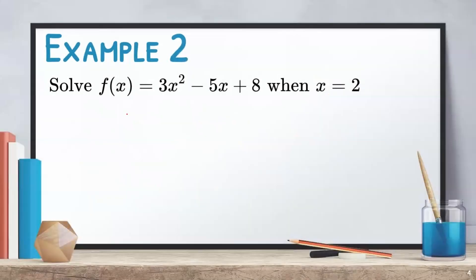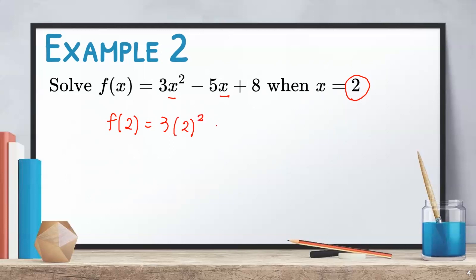Let us have another example. Solve f of x equals 3x squared minus 5x plus 8 when x equals 2. To evaluate this function, we substitute 2 to the x of the given function and then simplify. That will give us f of 2 equals 3 times 2 squared minus 5 times 2 plus 8.